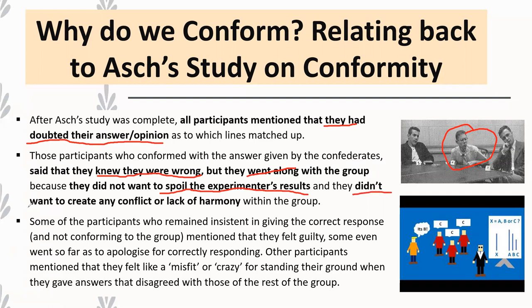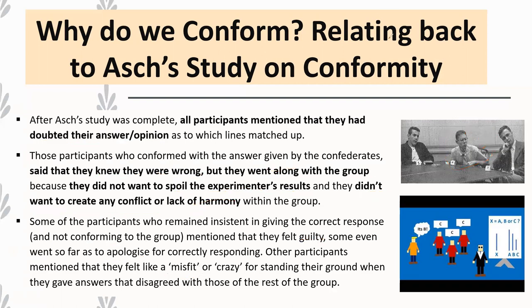They didn't want to create any conflict or lack of harmony. If everyone is saying line three is the longest and you think it's line two, saying line two opens up discussion and conflict — and this person didn't want that. Those participants who did remain insistent on giving the correct response mentioned that when they went against the group, they actually felt guilty. Some even apologised, saying sorry, I think it's actually line two. Other participants said they felt like outcasts or misfits for giving a completely different answer to everyone else.